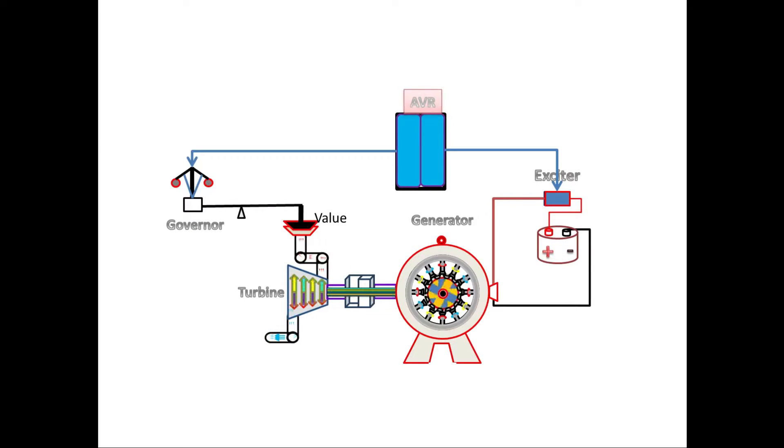First, we will see the reason for loss of field. When accidentally exciter CB gets opened during generator running condition, then the rotor field loses its power supply and the system will undergo under excitation.